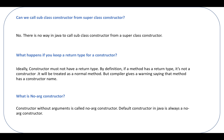What happens if we keep a return type on a constructor? Ideally a constructor must not have a return type. By definition, if a method has a return type it is not a constructor — it will be treated as a normal method. If you provide a return type to a method having the same name as the class, it will not be treated as a constructor. The compiler gives a warning saying the method has a constructor name.